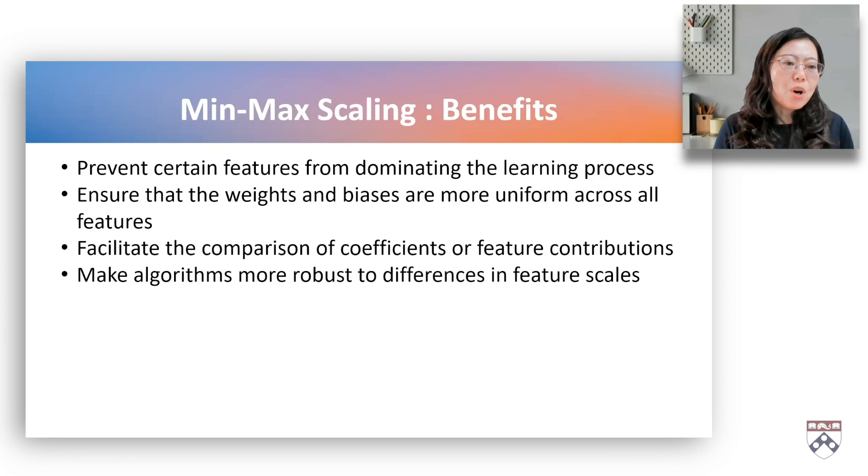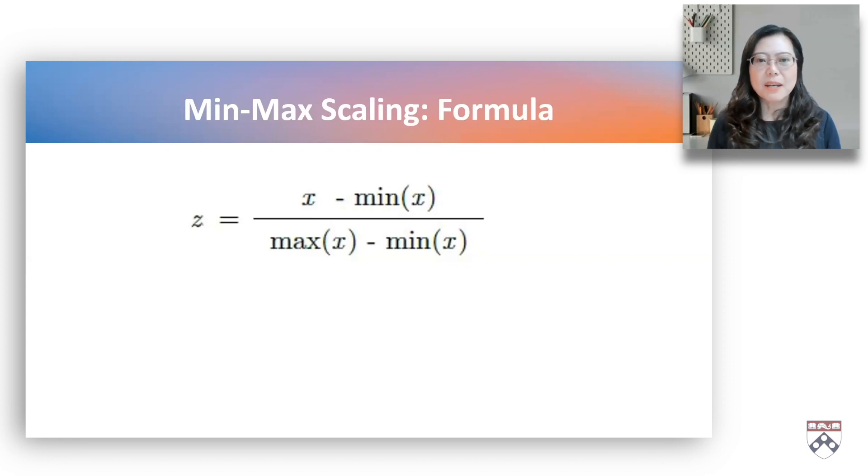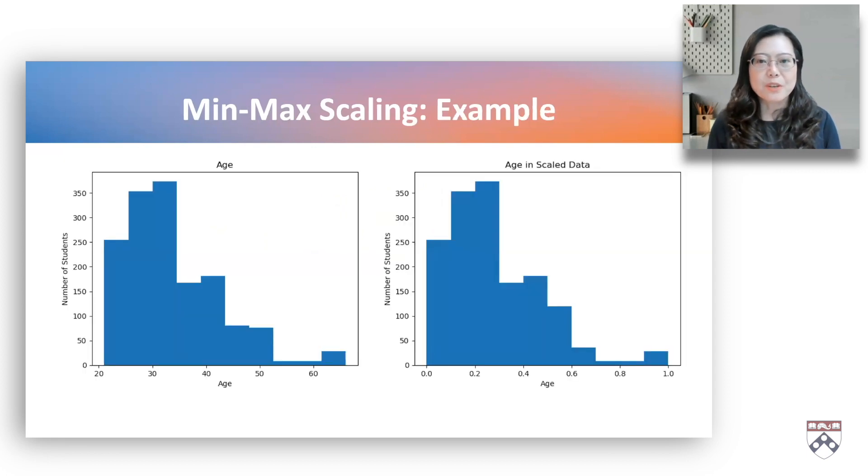Facilitate the comparison coefficients of feature contributions, and make algorithms more robust to differences in feature scales. Min-max scaling is calculated by taking the difference between a value and the minimal value, and dividing it by the difference between the maximum and the minimal values. Let's take the age variable as an example. The left graph describes the original age, ranging from 21 to 66. The right one shows the scaled age between 0 and 1.